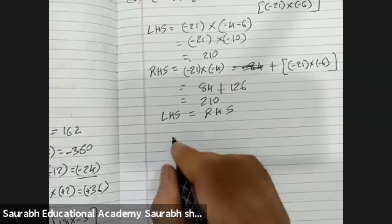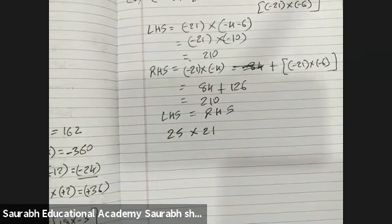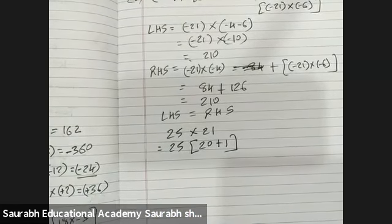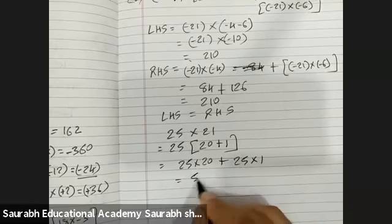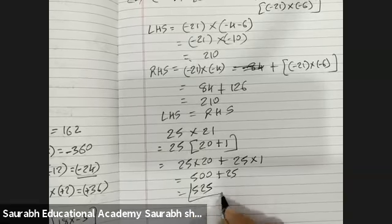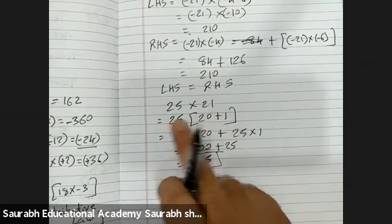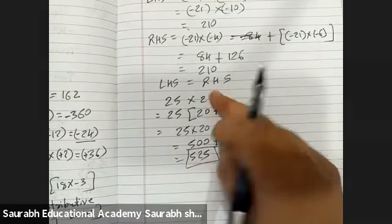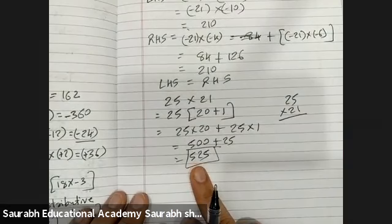Let me give one more example so you can clearly understand what distributive law is. 25 into 21 — if I want to multiply and I'm not getting the oral answer, I will split 21 into parts: 20 plus 1. So I get 25 into 20 plus 25 into 1, which is 500 plus 25, giving 525. I have distributed 21 into 20 plus 1, and 25 is multiplied with both. I get the answer directly without actually multiplying 25 into 21, by the method of distributive law.